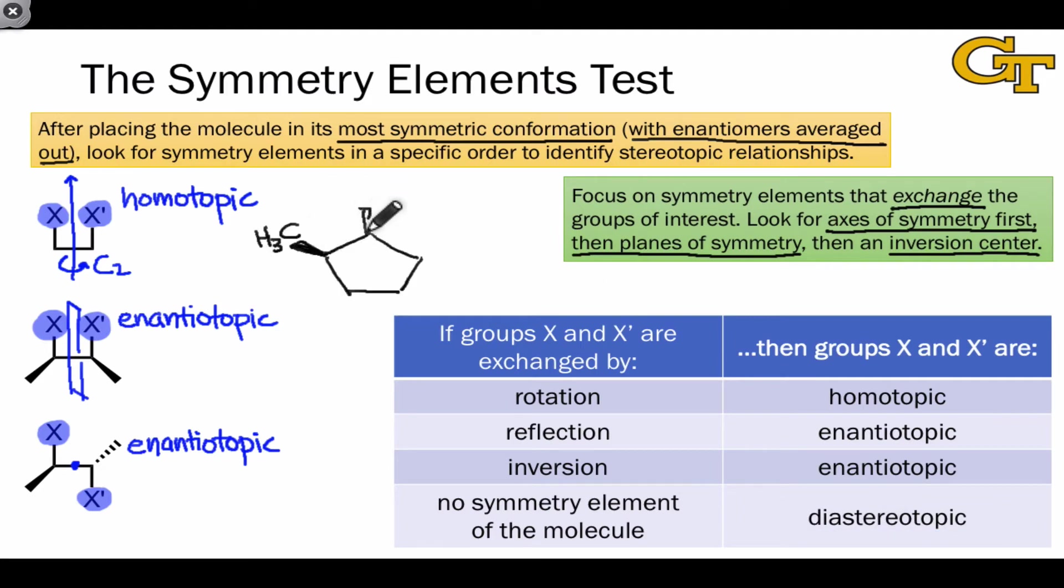As an example of this, consider the cyclopentane molecule that I'm drawing here. This molecule has no symmetry elements. It's completely asymmetric. So clearly then, no symmetry element can exchange the two methyl groups, since the molecule as a whole lacks symmetry elements. But the two methyl groups have the same connectivity,